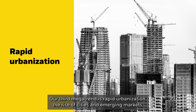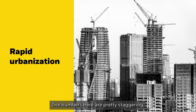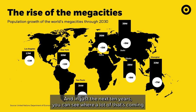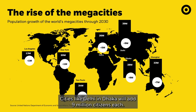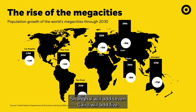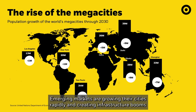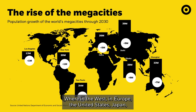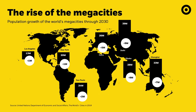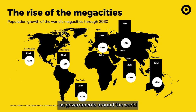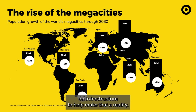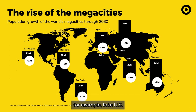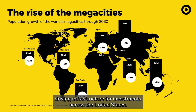Our third megatrend is rapid urbanization. The World Bank estimates $100 trillion of infrastructure spending over the next 20 years. In just the next 10 years, cities like Delhi and Dhaka will add 9 million citizens each, Shanghai will add 7 million, Cairo 5 million. Emerging markets are rapidly growing their cities, creating infrastructure booms. The opportunity also exists in developed markets — the US, Europe, Japan — where infrastructure needs repair and revitalization, further accelerated by post-pandemic government spending programs like US President Biden's Build Back Better, and supply chain reshoring activity.